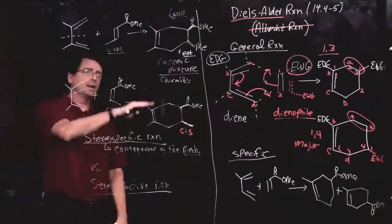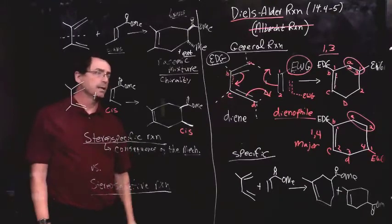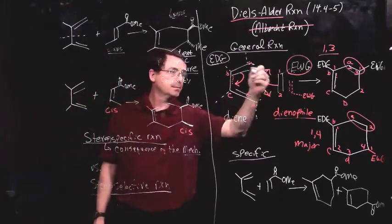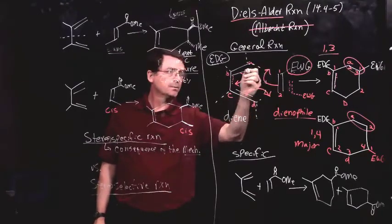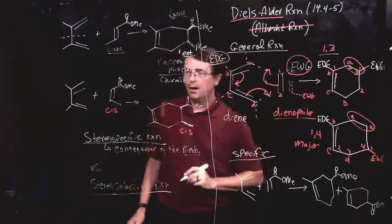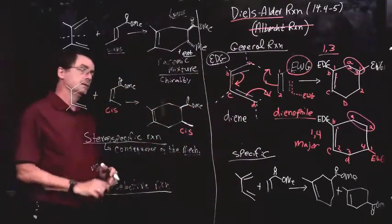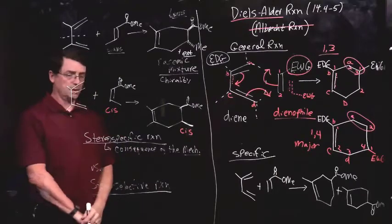Now, this goes back to the mechanism I drew a minute ago where the bonds formed, two sigma bonds, two pi bonds rearranged, and we form a new pi bond here, all occur simultaneously. That is, concurrently, at least for our class.